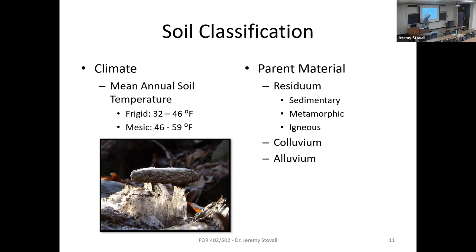The parent materials in the park are either residuum — rocks weathered in place — or colluvium, which is rocks that have rolled downhill, or alluvium, rocks moved by rivers and streams. With residual materials, you have sedimentary rocks, metamorphic, and igneous. Igneous is formed from cooling magma. Sedimentary is formed from layers of sediment piling up. Metamorphic rocks are sedimentary, igneous, or other metamorphic rocks that get crushed under heat and pressure for a long period of time — so metamorphosed or changed.